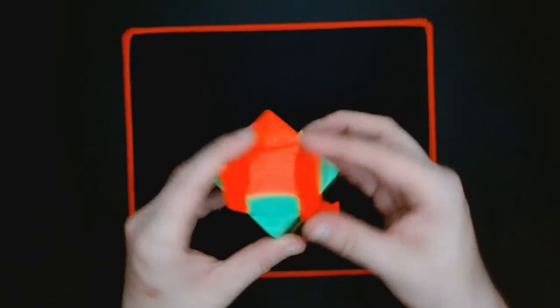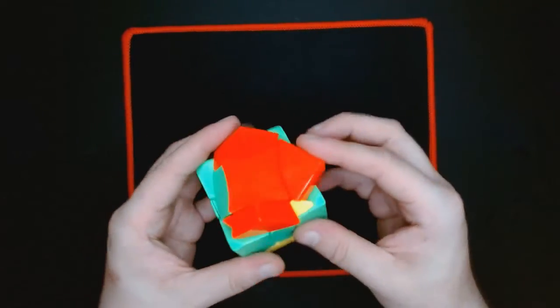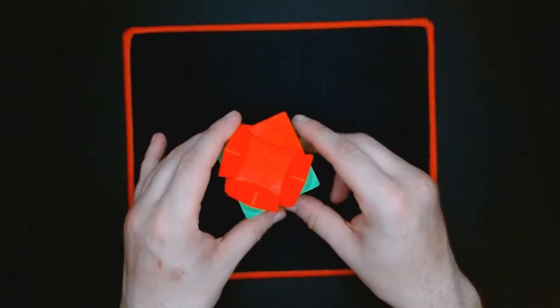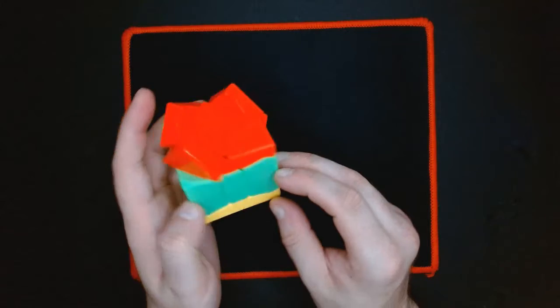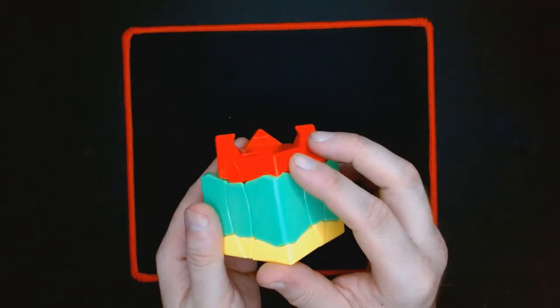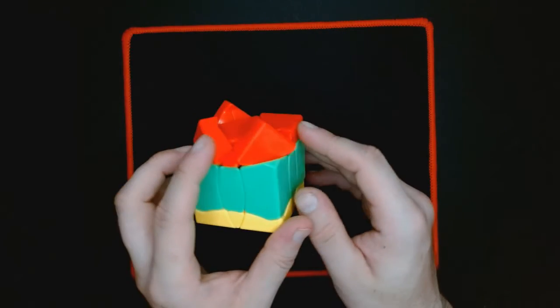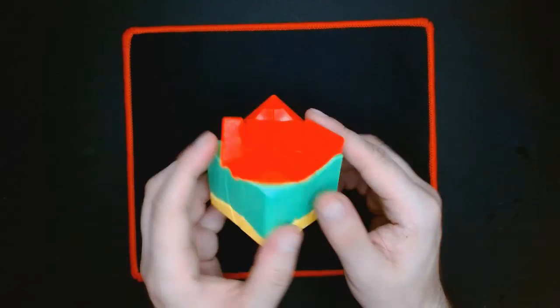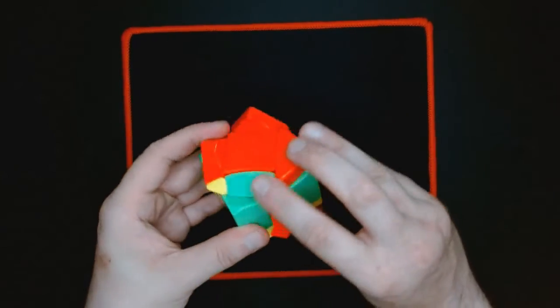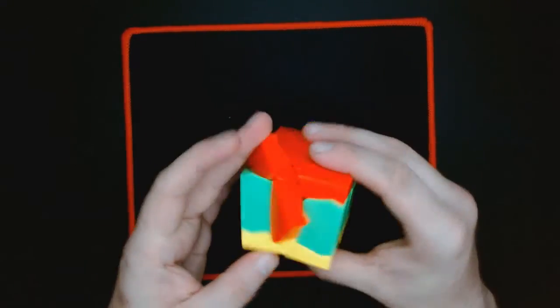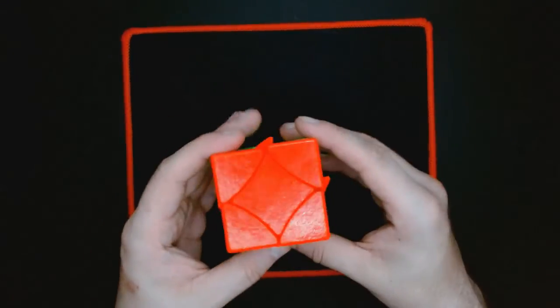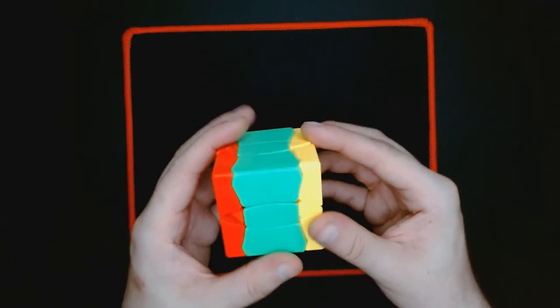We have one edge down and then three wrong, one correct, three wrong. It's kind of like what you get with a Fisher cube, so all we got to do is flip over an edge. There you go, it fixed it.